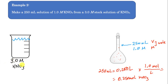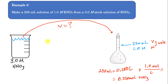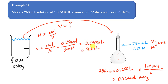Those 0.25 moles are going to come from the stock solution. Since adding water doesn't change the number of moles, I need to find what volume of the 3 molar stock solution contains exactly 0.25 moles. If I know the molarity and the moles, I can use the molarity equation — moles over liters — to find that volume.